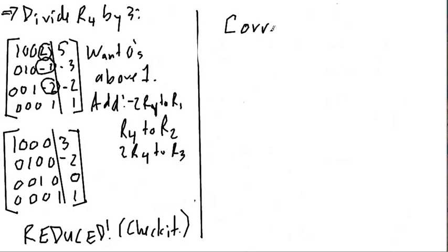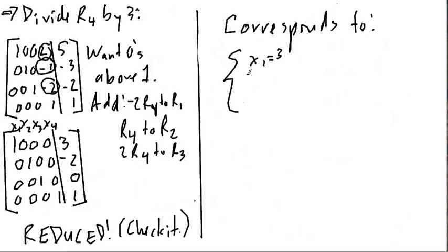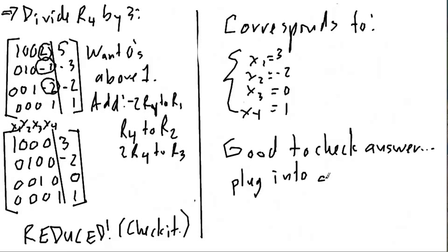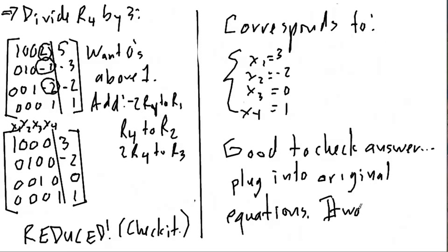When it's reduced, we can immediately get a reduced system. The columns correspond to the unknowns x1, x2, x3, x4. When I write out the corresponding system, I just get x1 is 3, x2 is negative 2, x3 is 0, and x4 is equal to 1. This one works out nicely. It's a good idea to go back to the original system and check that this is a solution — plug it into the original equations and see if it makes them true. I'll leave that as an exercise, but believe me, it works out.